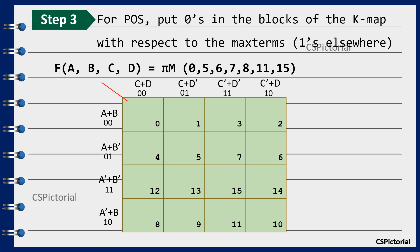In this example, place 0 in the cells numbered 0, 5, 6, 7, 8, 11 and 15. Fill all the remaining cells with 1. Do not forget this is the major difference between the SOP form and POS form.